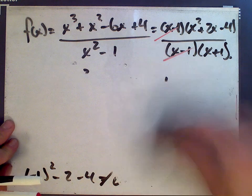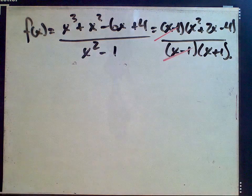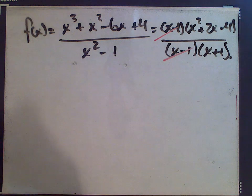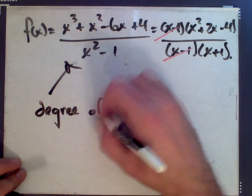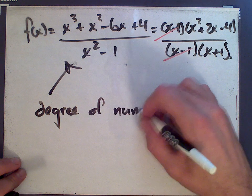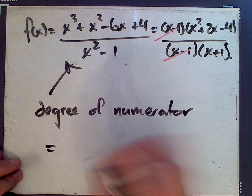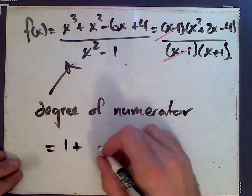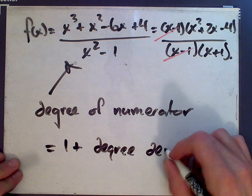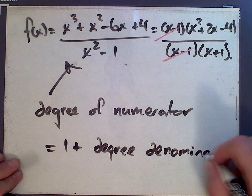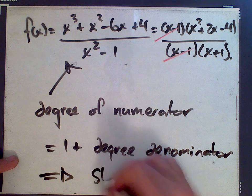For slant asymptotes, we don't have to do much. Again, you can see that even in its reduced form, the degree, which is the highest power of x of the numerator, is one more than the degree in the denominator. So this implies that there's a slant asymptote.